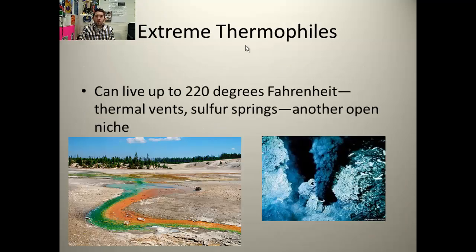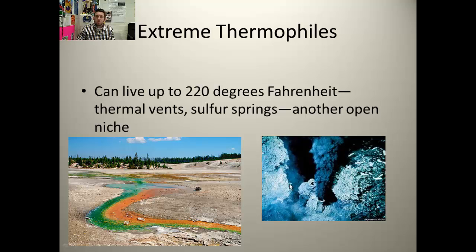Thermophiles are the third group of domain Archaea. They can live in conditions up to 220 degrees Fahrenheit. We find these types of conditions in thermal vents — deep ocean vents — and in sulfur springs like those found out west, perhaps in Yellowstone National Park. Once again, very harsh conditions with not many things living there. They've moved into this open niche, they're thriving, and they don't have much competition for resources.